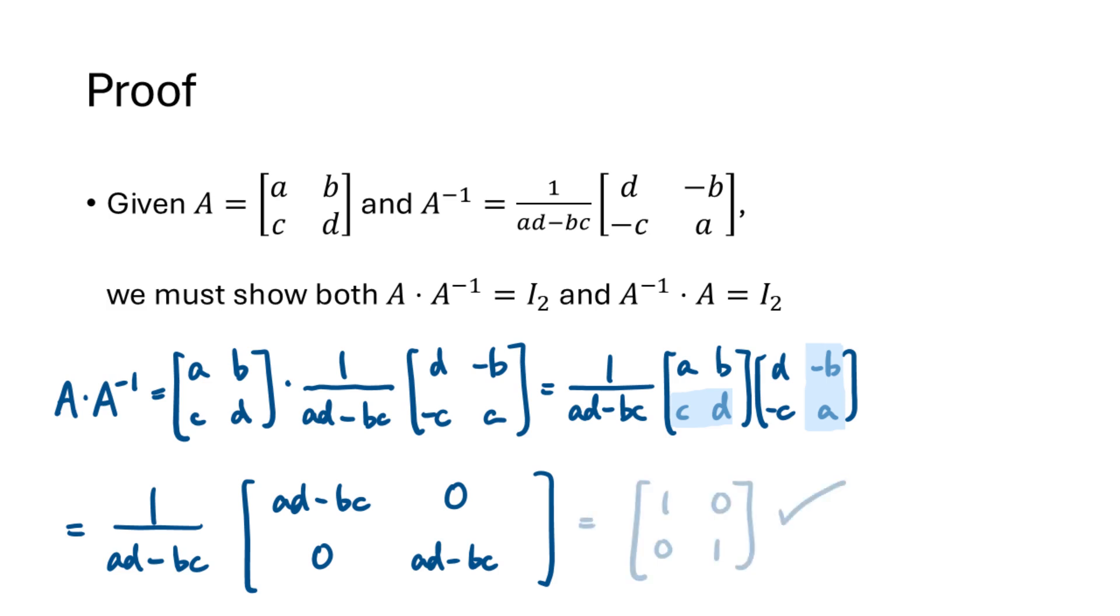So when we multiply by 1 over AD minus BC, we get the identity matrix 1, 0, 0, 1. So that proves that A times A inverse is I2, and the proof that A inverse times A equals I2 is very similar, so I'll leave that to you to think about.